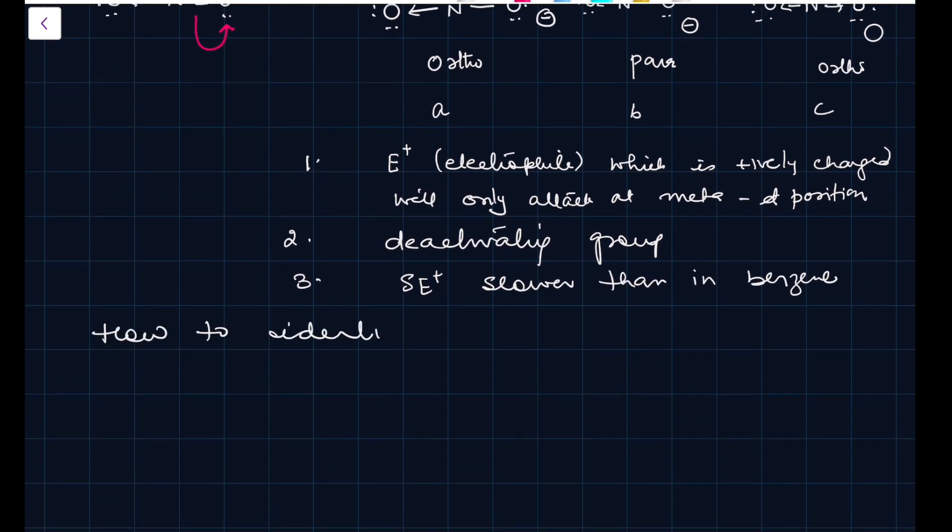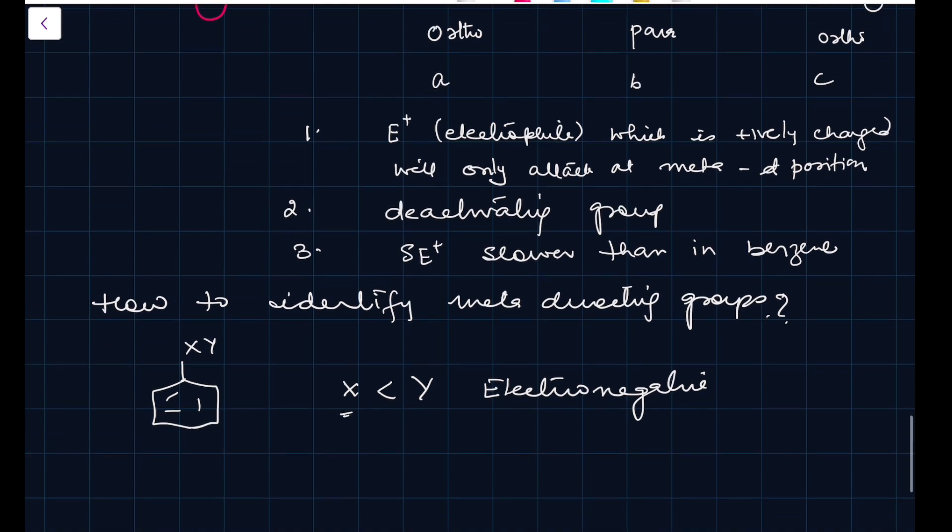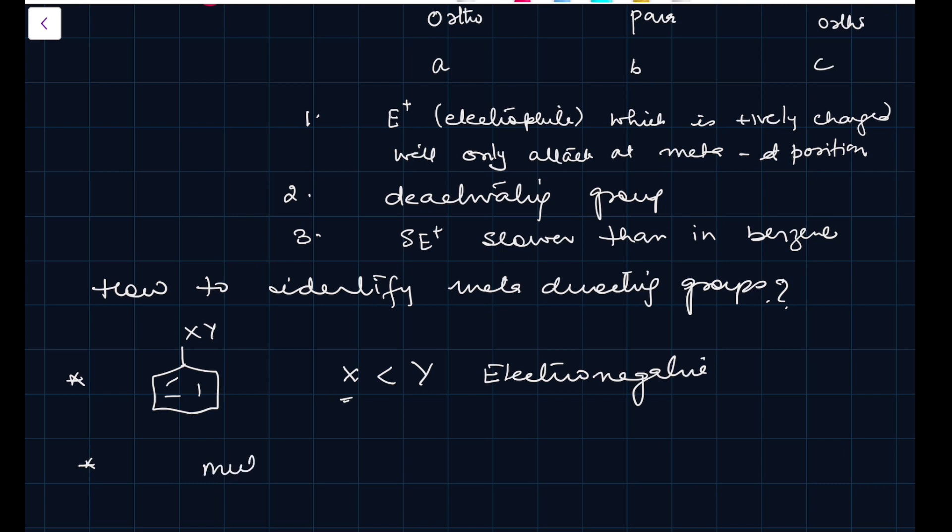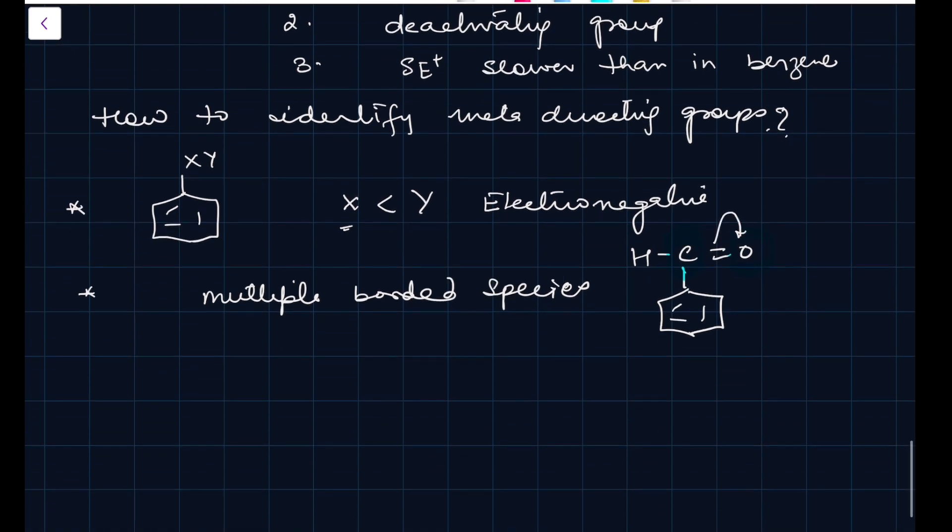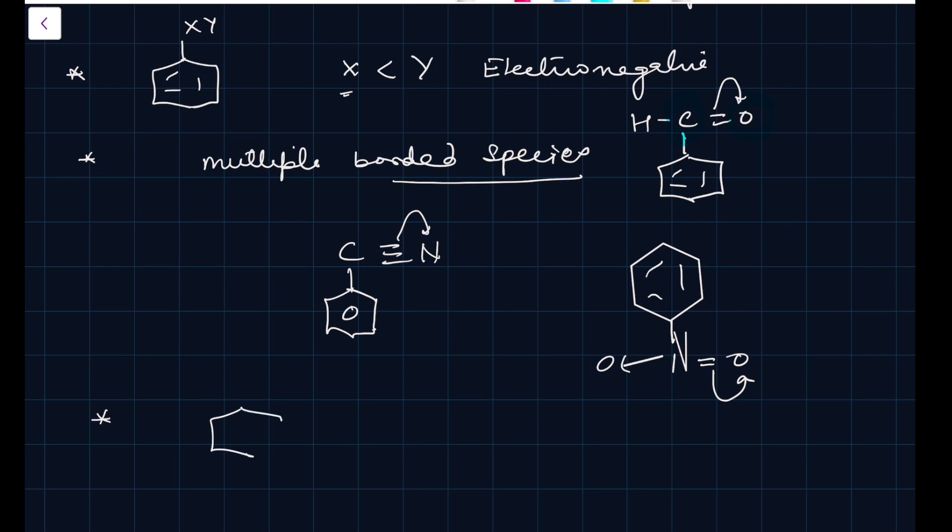How to identify meta-directing groups? If X is less electronegative than Y, for O-P directing, it was X was more. So, if X is less electronegative than Y, meta-directing. Then, if you have multiple bonded species, in which the one which is less electronegative, something like this, C is low on electronegativity than O. So electron density is toward the one. Next example, NO2. Again, O to the one. CN, if this is attached to benzene ring, N to the one. Multiple bonded species, where there is a difference of electronegativity. If there is a plus charge, anilineum, this has got a positive charge. Electron density will go outward.